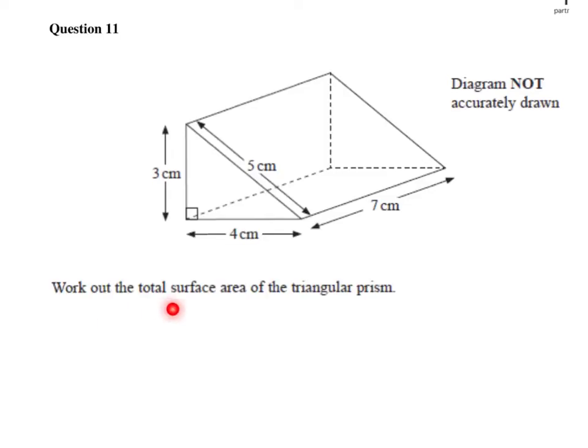We've been asked to work out the total surface area of the triangular prism. The triangular prism has dimensions 4 for its width, 3 for its height, 7 for its depth, and a slope height of 5.